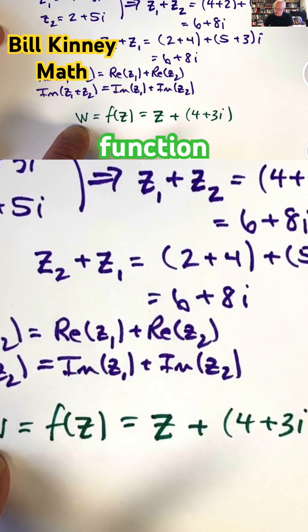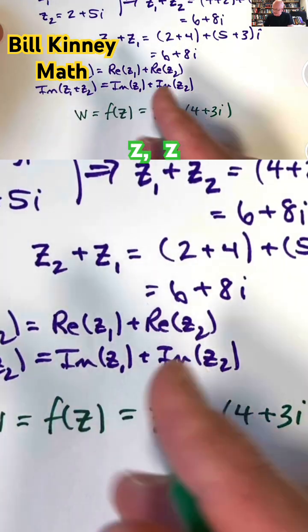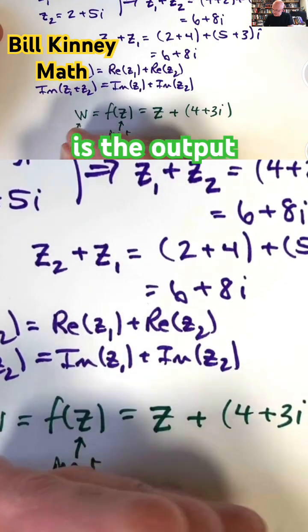A complex valued function. W is a complex number of a complex variable Z. Z is the input, W is the output.